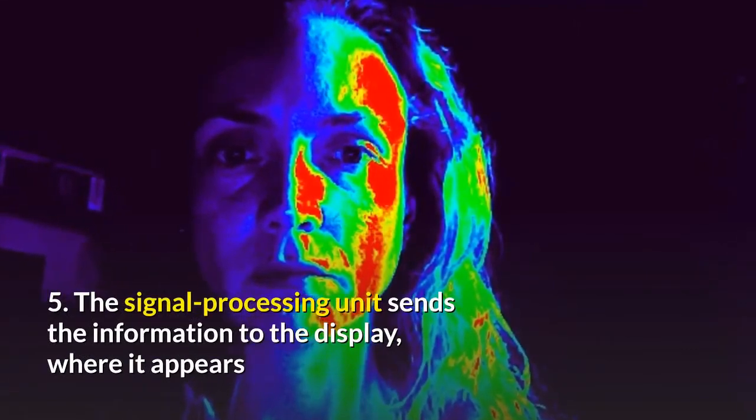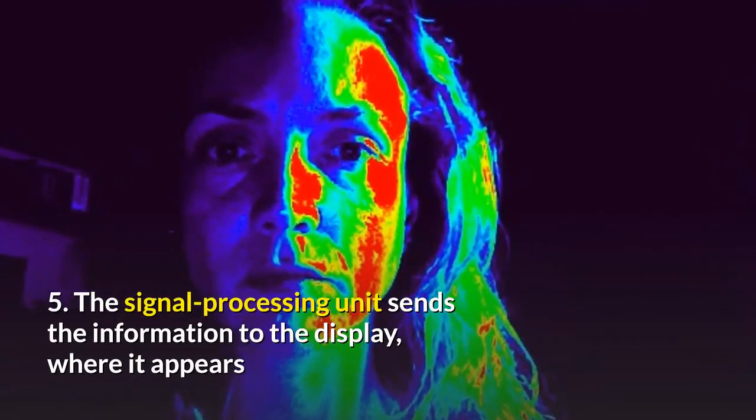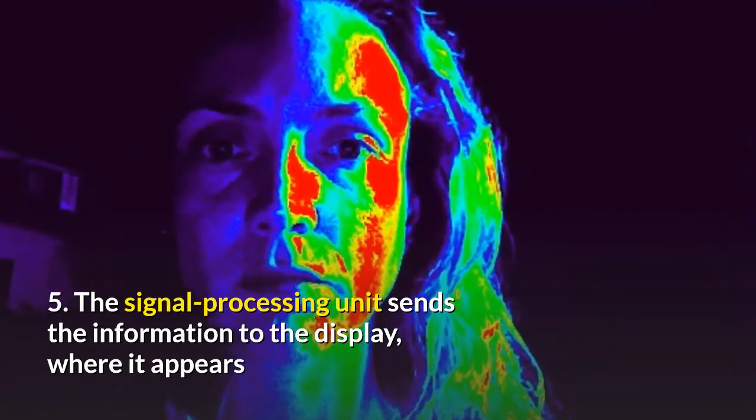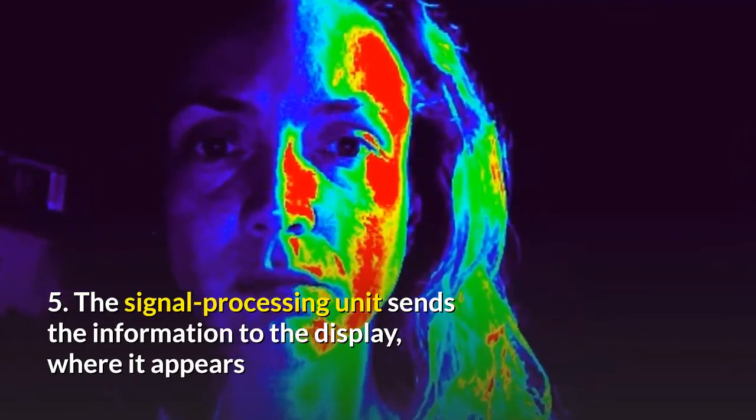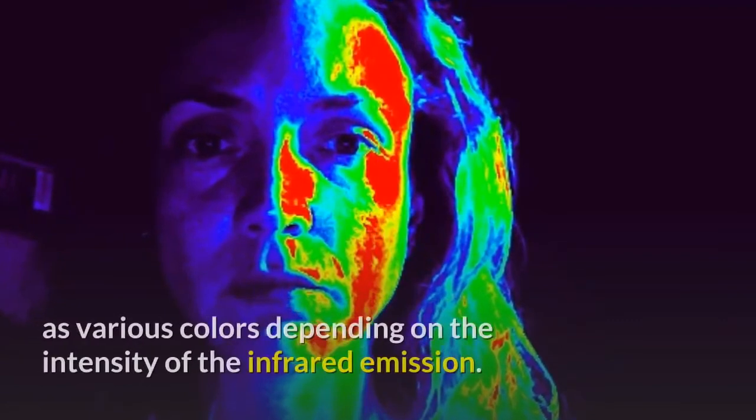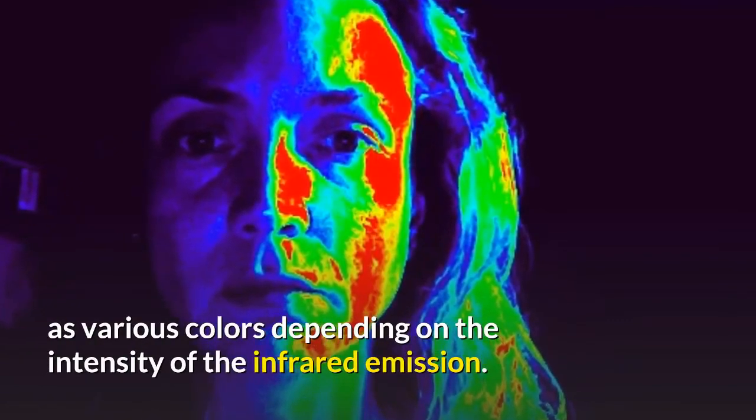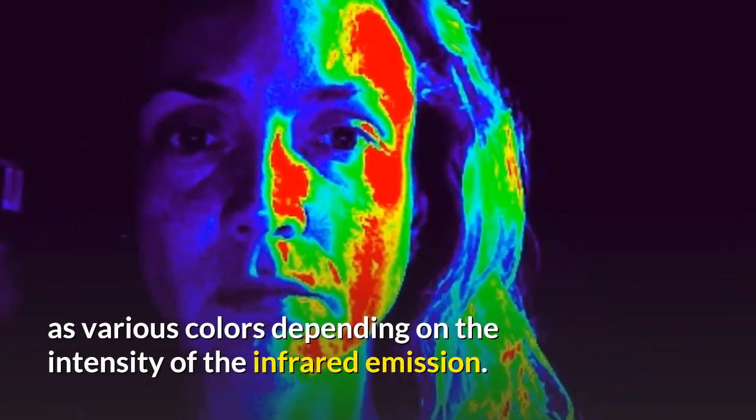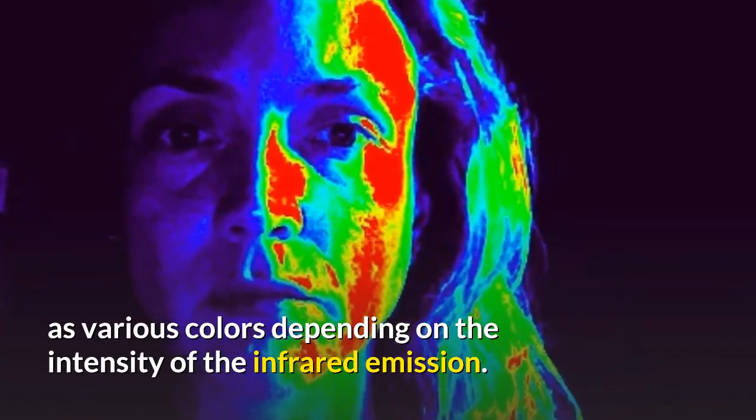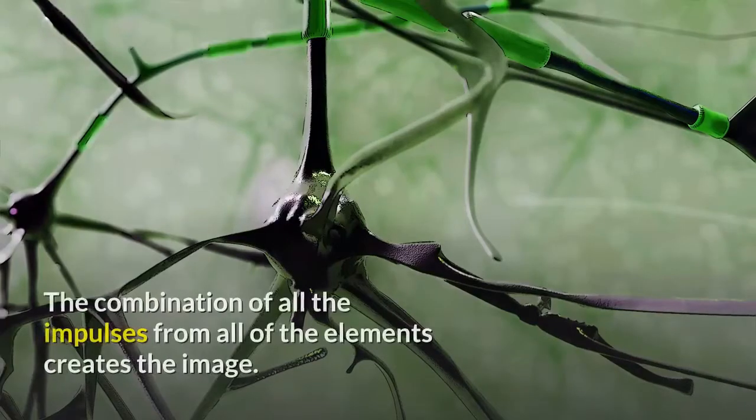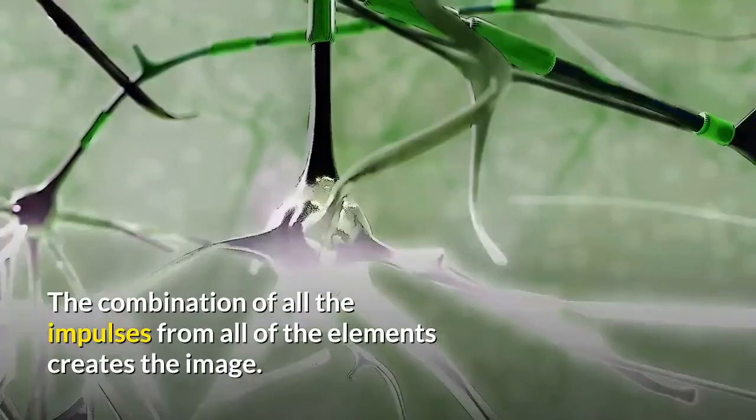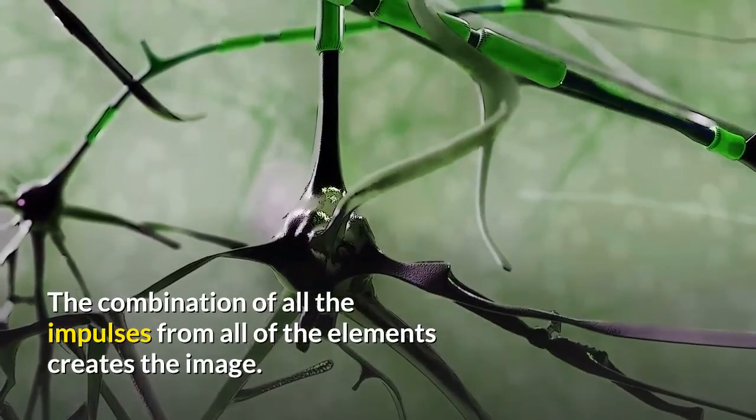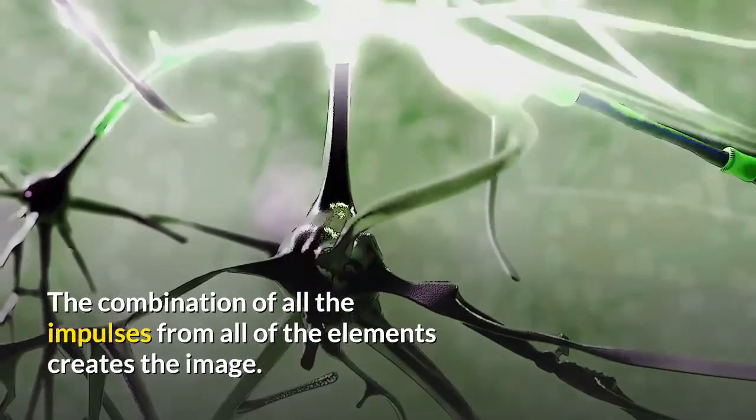The signal processing unit sends the information to the display where it appears as various colors depending on the intensity of the infrared emission. The combination of all the impulses from all of the elements creates the image.